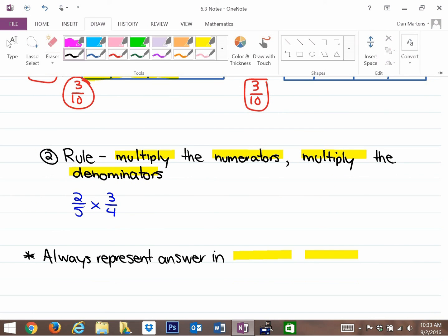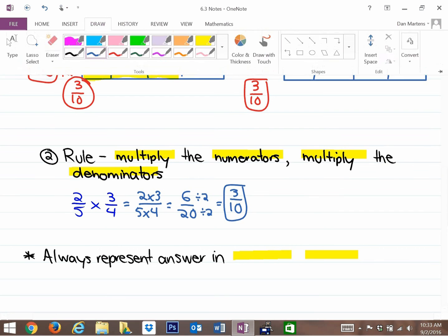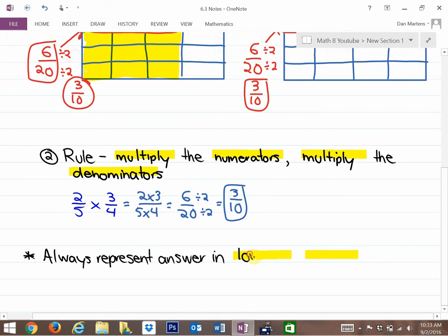So multiplying the numerators and multiplying the denominators. So the top times the top, and you'll notice that 2 × 3 is 6. And the bottom times the bottom, 5 × 4 is 20. And that's the exact same answer that we had up here once reduced. So six-twentieths. If you reduce it to lowest terms, you get an answer of three-tenths. The last note to make here is to always represent your answer in lowest terms.